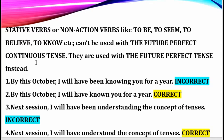Stative verbs or non-action verbs — like 'to be,' 'to seem,' 'to believe,' 'to know' — cannot be used with the future perfect continuous tense. They are used with the future perfect tense instead. Stative verbs don't carry -ing forms. That's why we are not supposed to use the future perfect continuous tense with them. Opt for the future perfect tense instead.